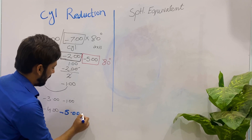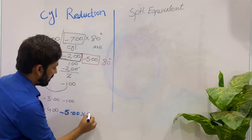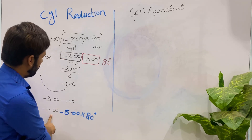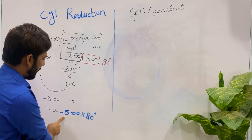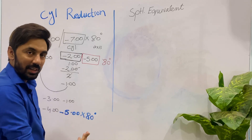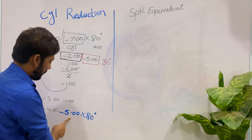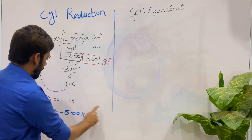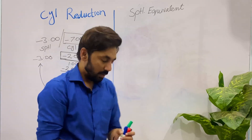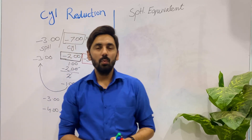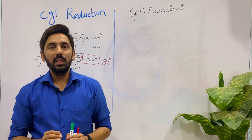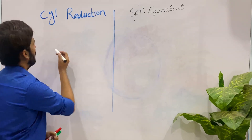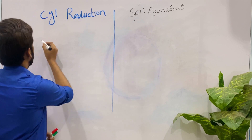The new prescription is minus four spherical with minus five cylinder at the same axis of 80. This is cylindrical reduction. You perform this procedure when your patient is not comfortable with a high cylinder prescription. Now let's take another example of cylindrical reduction before we go to the spherical equivalent.